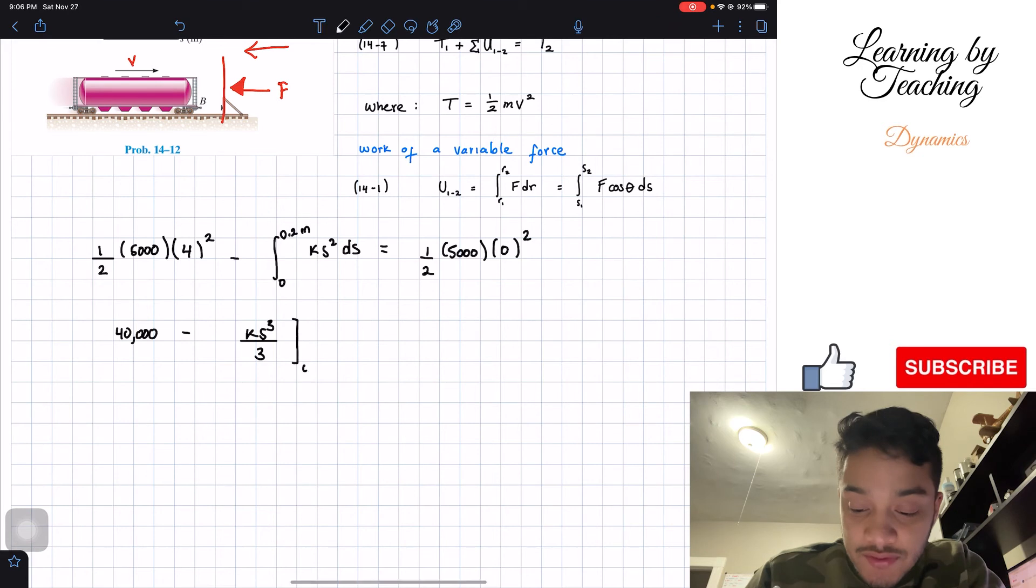Well that will give me k s cubed divided by 3 and we still need to evaluate it from 0 all the way to 0.2, and this should be equal to 0. Why 0? Because we got 0 multiplied by a number will give me a total of 0.